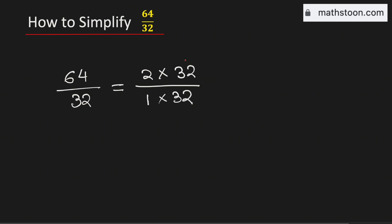So that we can cancel the common number which is 32. Therefore, it is equal to 2 over 1, which is the same as 2. So, 64 over 32 simplified is equal to 2, and this is our final answer.